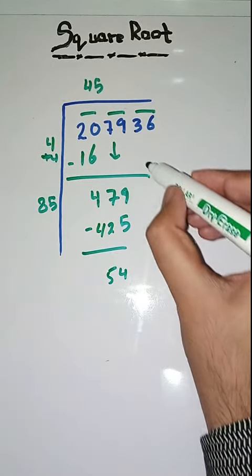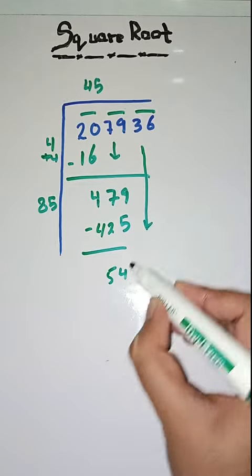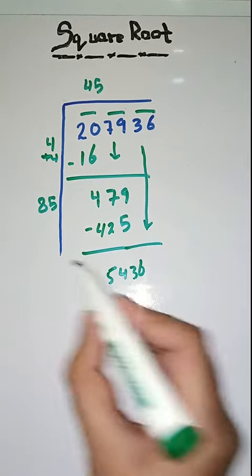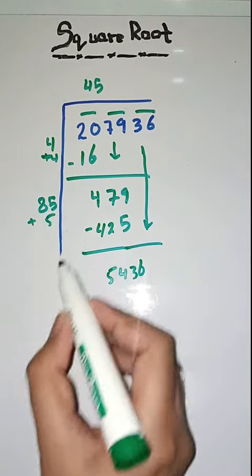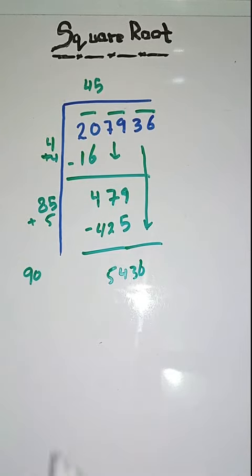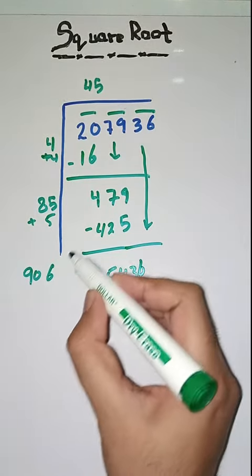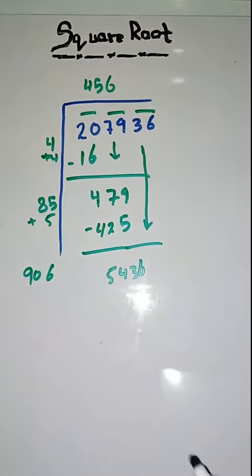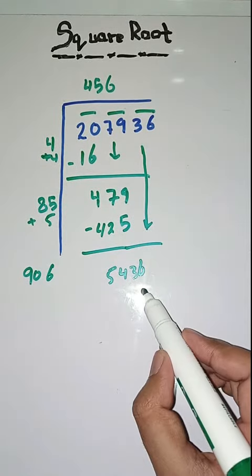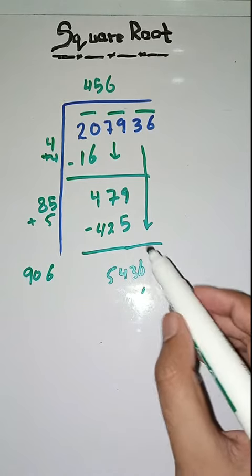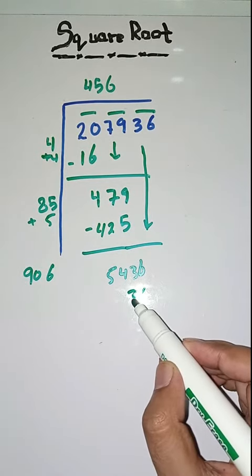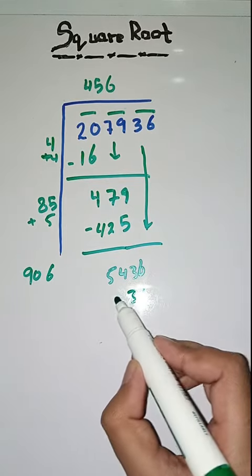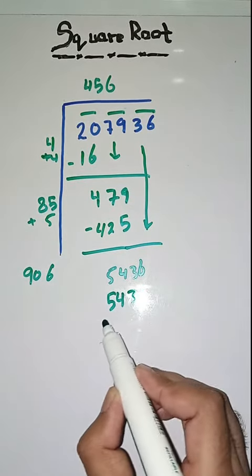And then next we bring down 36. Here we do this: 85 plus 5 which is equal to 90. So we take number 6. 906 multiply by 6. 6 times 6 is 36, 0 times 6 plus 3 carry is 3, and 9 times 6 is 54. So we complete this.